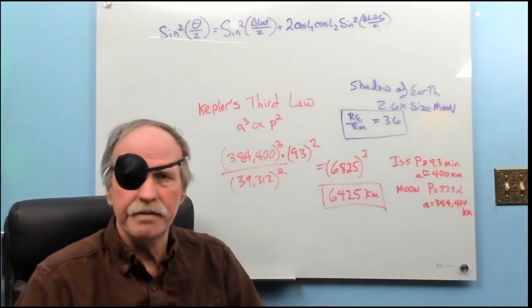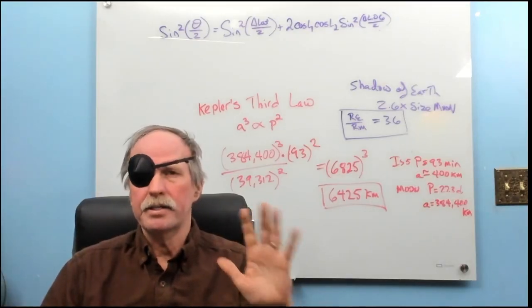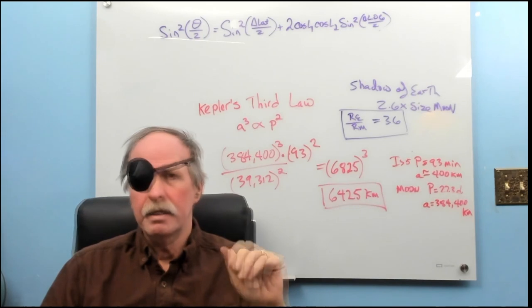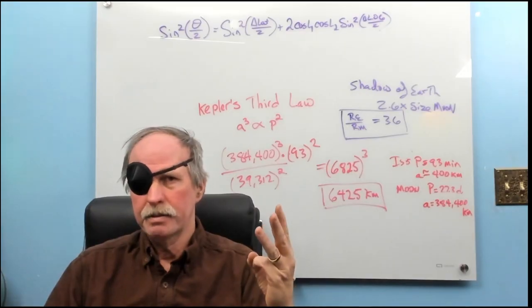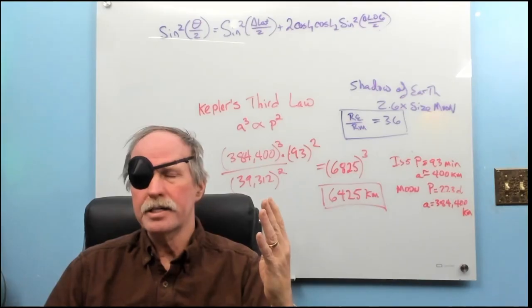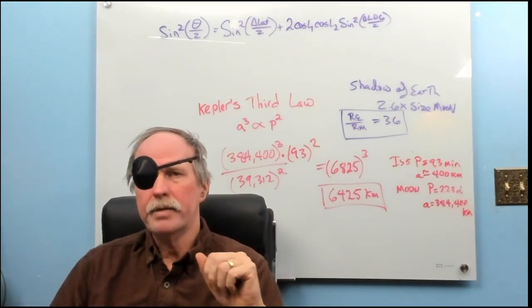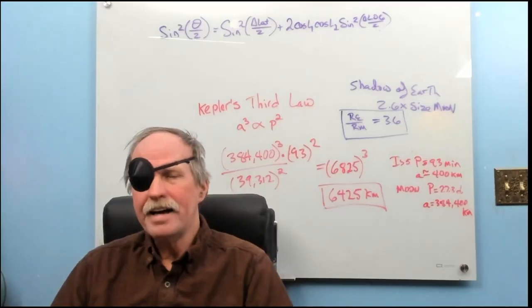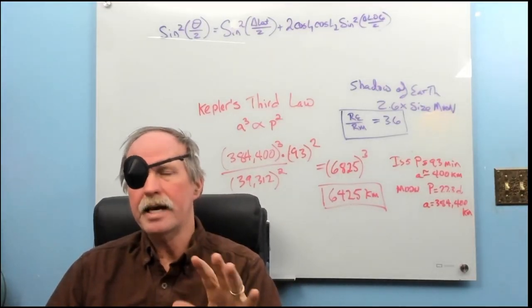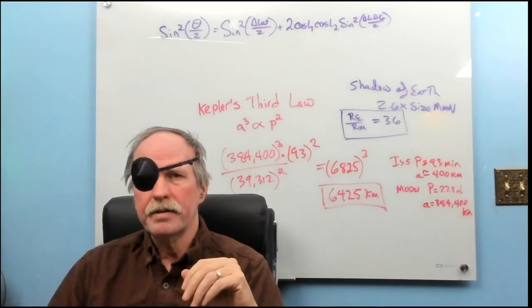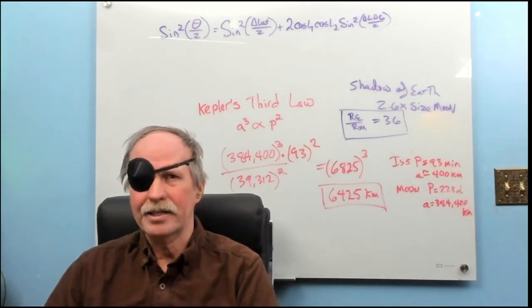So, not only do the ancients have it, the folks in the Renaissance have it as well. So, now we have five ways of determining the radius of the earth. We have Eratosthenes. We have Al-Baruni. We have Great Circles. We have Aristarchus in the distance from the earth to the moon. And then we have Kepler, looking at the orbital period of the ISS. When you have five different measurements, looking at five different parameters and data sets, and all come back to the same radius of the earth within one or two percent, we can have a lot of confidence that that's the correct R.